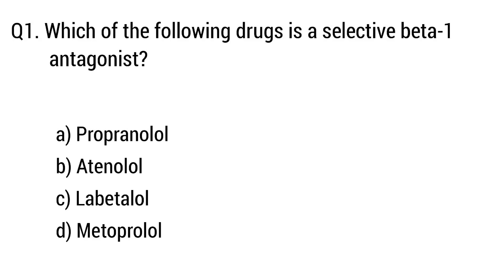Question number one. Which of the following drug is a selective beta-1 antagonist? The right answer is option B: Atenolol.